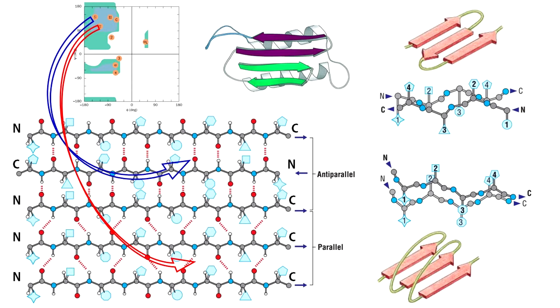If the beta strands run in the same direction, they are called parallel beta strands. If they run in opposite directions, they are called anti-parallel beta strands. Remember guys that both parallel and anti-parallel beta sheets are found in biological proteins. There are several examples of mixed beta sheets as well where both parallel and anti-parallel strands stay together.